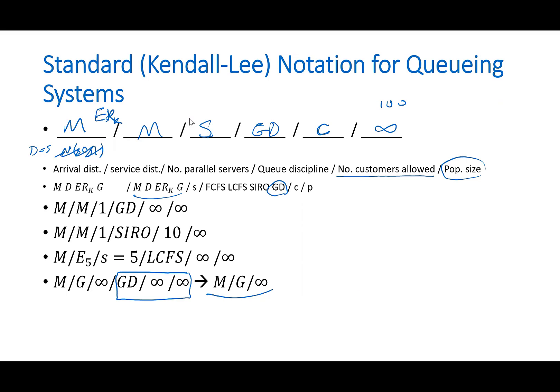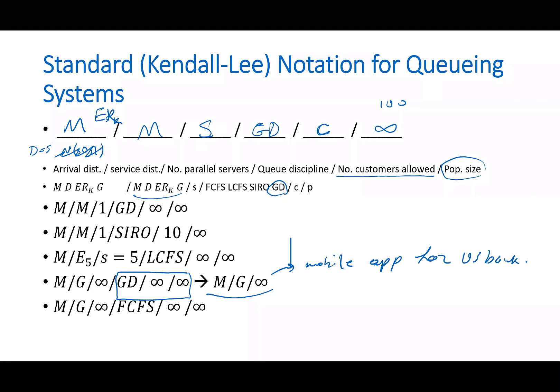So these are like servers, which means, for example, the number of cashiers that serve people who are waiting in line. One example of this is actually mobile app for, for example, U.S. Bank. As soon as you log in, you can use the server. You're being served. You don't wait in line, right? So it's like infinite servers.